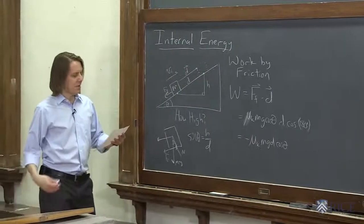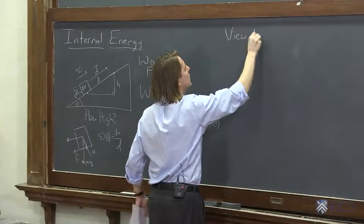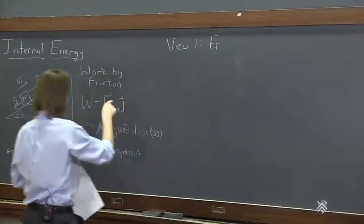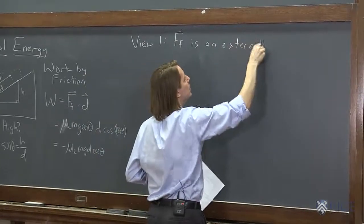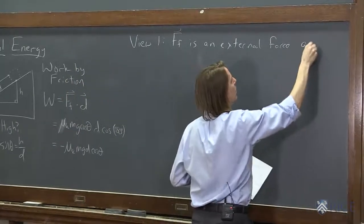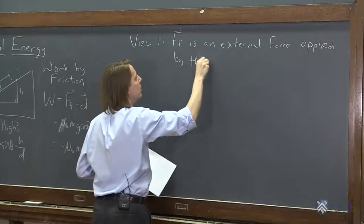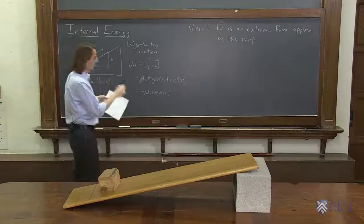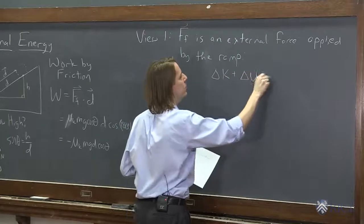So now to use this in a problem, there's sort of two ways to look at it. So one way, we'll call this view one. View one is that the frictional force, F frict, or what do I call it, FF, is an external force. So it's not part of the system, an external force applied by the ramp. By the ramp. So in this view, the system is just the block. So you would just apply this idea, delta K plus delta U equals the external work.